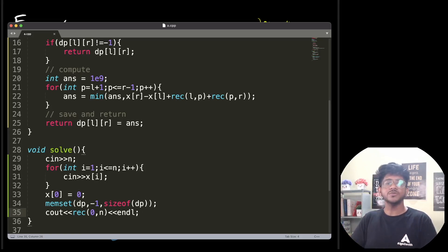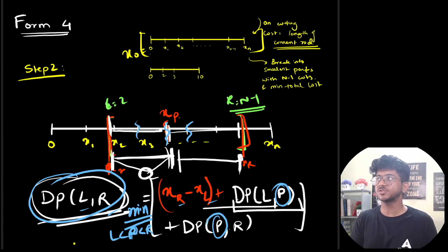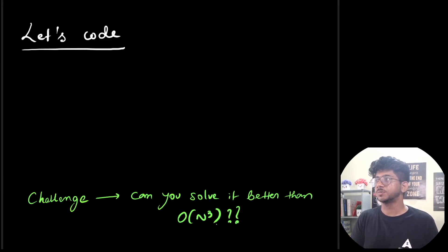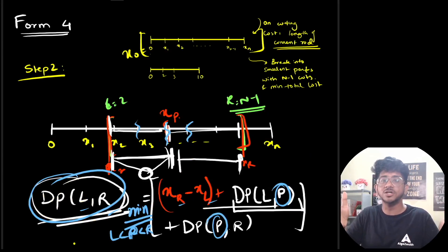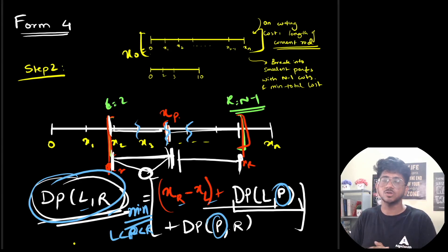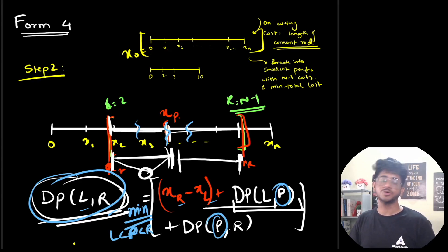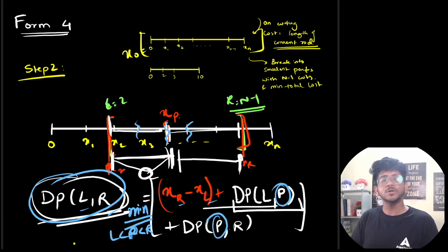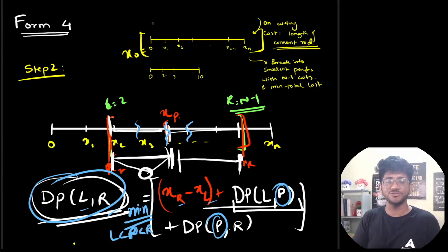That's almost all for this particular problem and for form four as well. We're going to see more problems on this form soon, since it's a really important form and a lot of questions are built around it. We've understood LRDP — dealing with intervals. In the next video, we'll unlock the last form, form five, and close off for today. Hit the like button if you liked this video and let me know in the comments which form is your favorite so far!